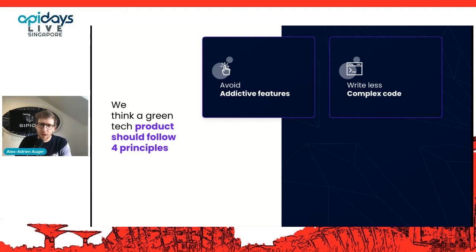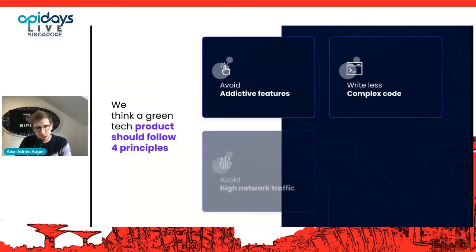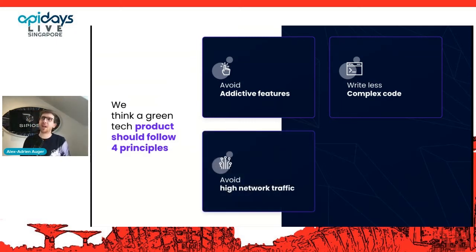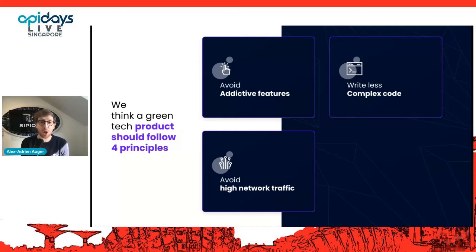The second principle is a much more techy one. It's about writing good code that is performing enough but not too many calculations for what you want to do. The third principle is to avoid too much network traffic. If you design an app that is sending data through the internet, be careful of what you send. There is no point in sending data that you don't use on the backend, and it has an impact. So we should be careful about this.